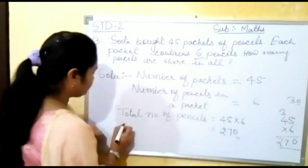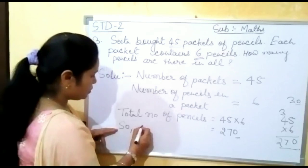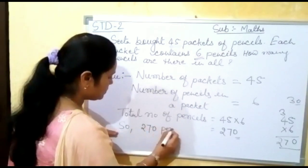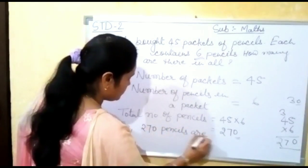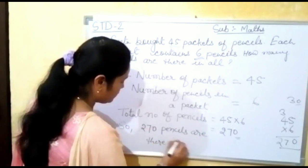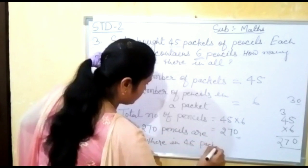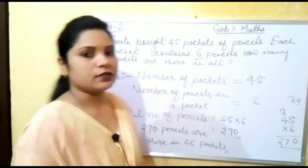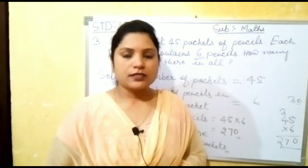Now we can write the last sentence: 270 pencils are there in 45 packets. This is the answer of this question. We will do the remaining questions in the next class. Till then, thank you so much.